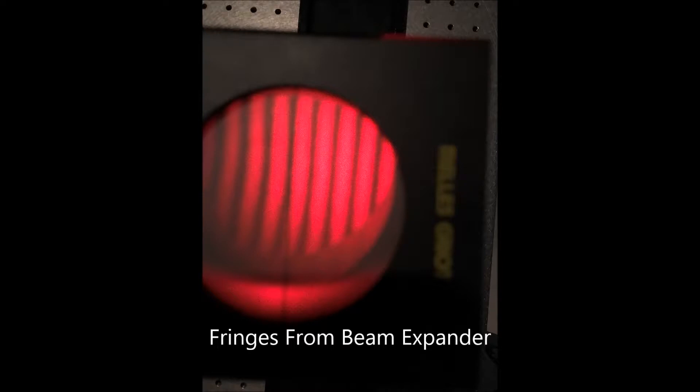We checked for collimation with the wedged shear plate and translated the collimation lens in Z until the fringes were parallel to the reference line.